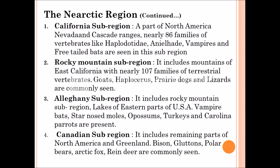The third one is the Allegheny sub-region. It includes the Rocky Mountains and Cascade ranges of the eastern parts of America. Commonly, Vampire bats, Shrews, Moles, and Opossum are found here. The fourth one is the Canadian sub-region. It includes the remaining parts of North America and Greenland. Here, Bison, Glutton, Polar bears, Arctic fox, and deer are commonly seen in this area.